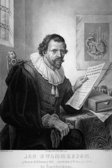Jan Swammerdam was a Dutch biologist and microscopist. His work on insects demonstrated that the various phases during the life of an insect — egg, larva, pupa, and adult — are different forms of the same animal.